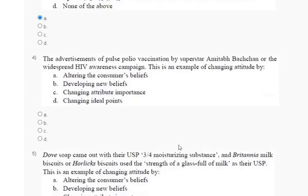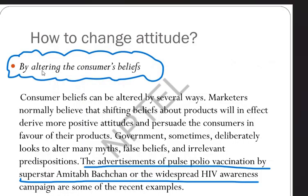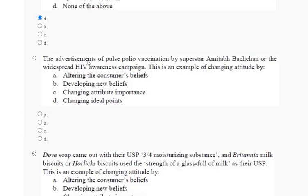Question number 4: the advertisement of the Pulse Polio vaccine by superstar Amitabh Bachchan and the widespread HIV awareness campaign — this is an example of changing attitude. The explanation is: by altering the consumer belief, the advertisement of the Pulse Polio vaccine by Amitabh Bachchan and the widespread HIV awareness campaign are some recent examples. So the correct answer for question number 4 is option number A.